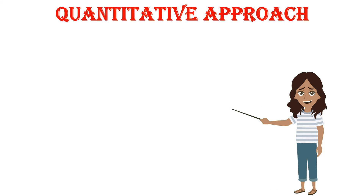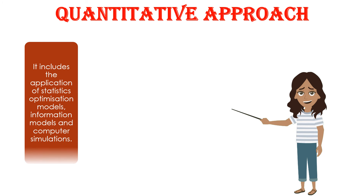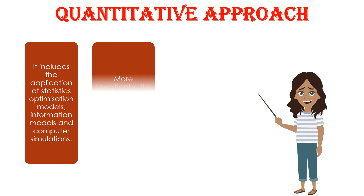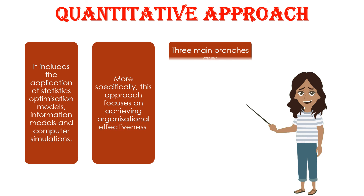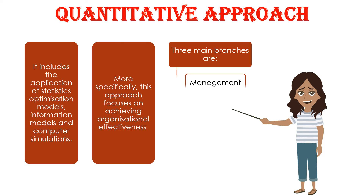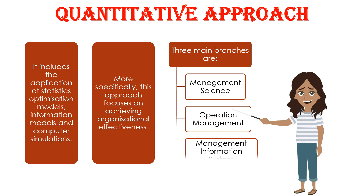The quantitative approach includes the application of statistics, optimization models, informational models, and computer simulations. More specifically, this approach focuses on achieving organizational effectiveness. The three main branches are: management science, operational management systems, and management information systems.